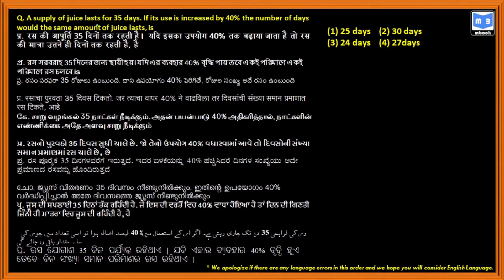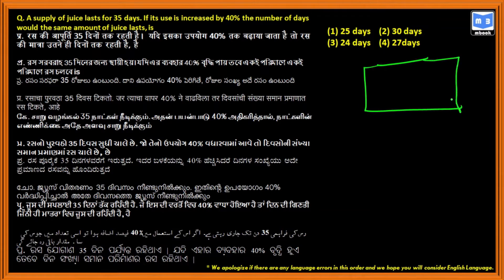A supply of juice lasts for 35 days. If the use is increased by 40 percent, the number of days the same amount of juice will last — let's take a table with juice and days.